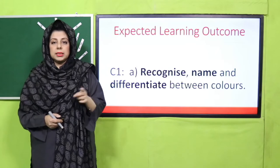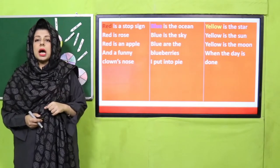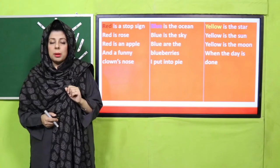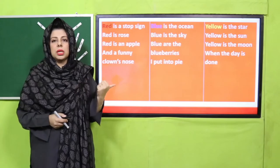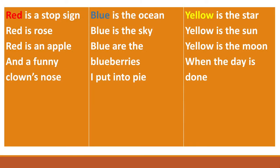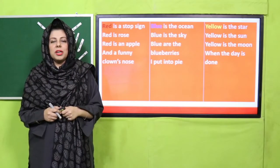Hum ne bohut sare colors ke baare mein baat ki thi - primary and secondary colors. Chaliye aage badhte hain. Kya aapko primary colors ki poems yaad hai jo aap ne play group mein ya nursery mein ki thi? Dear teachers, agar bachyo ko ye poems aati hain toh video ko yahan pause kar lijiye aur ye poems unke saath action ke saath sing kar lijiye. Red is a stop sign, red is a rose, red is an apple and a funny clown's nose. Blue is the ocean, blue is the sky, blue are the blueberries I put in my pie. Yellow is the star, yellow is the sun, yellow is the moon when the day is done.